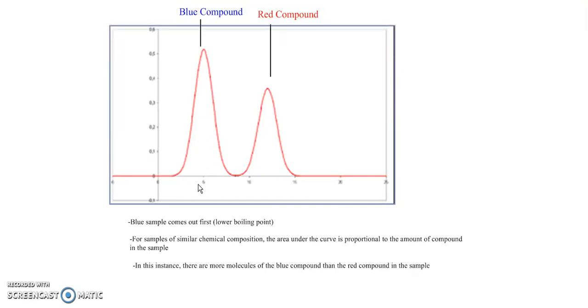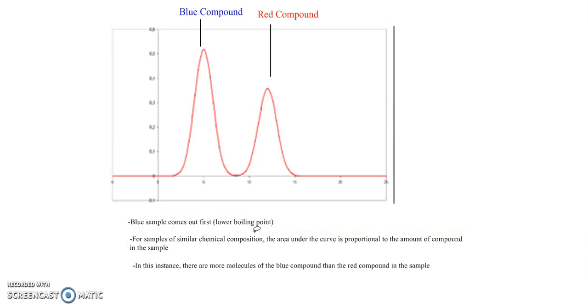Now a lot of times also in a GC trace - and it's not shown here - you will see a very small sharp peak at time equals zero, and this is usually due to air being in the sample or the syringe. It goes through the column very rapidly and gives what's called an air peak that we use as the time zero.